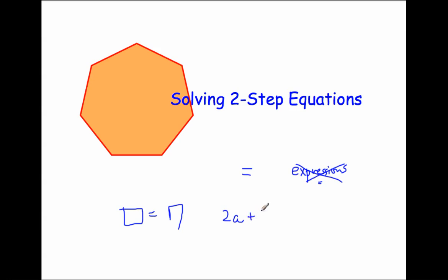So you have 2a plus 4 equals 9. So whatever this number is, it has to be equal to 9. So 2a plus 4, when everything gets figured out, it'll get simplified to 9. And that's the reason why we use an equal sign. Alright, so let's move on and figure out how to solve two-step equations.